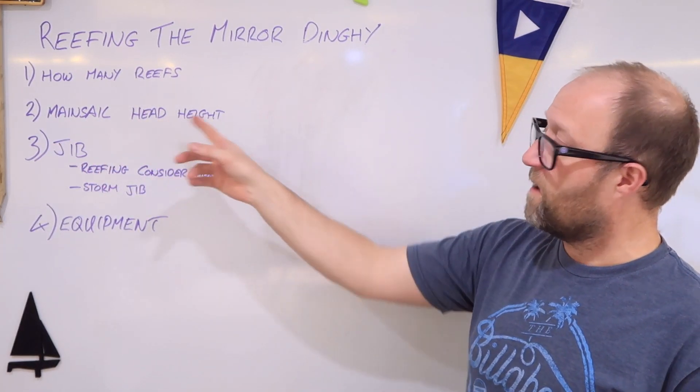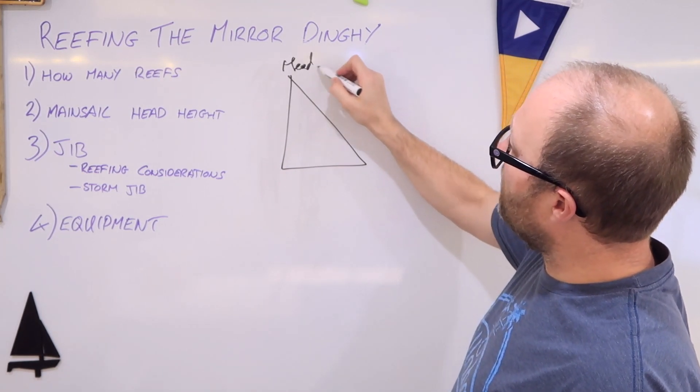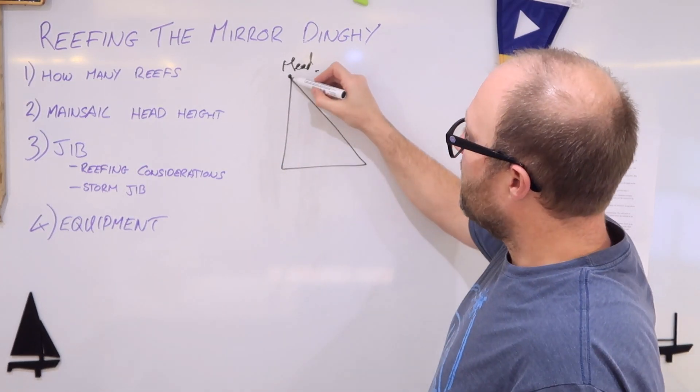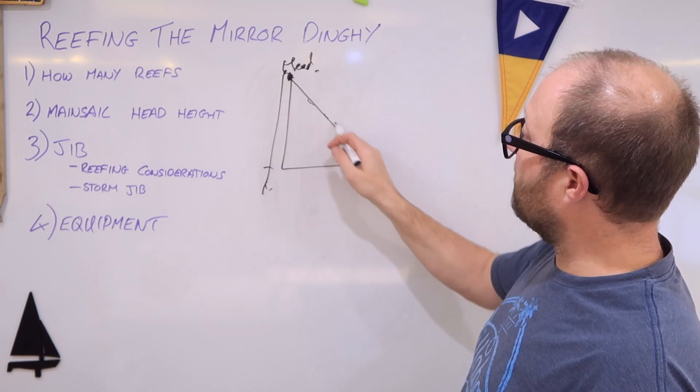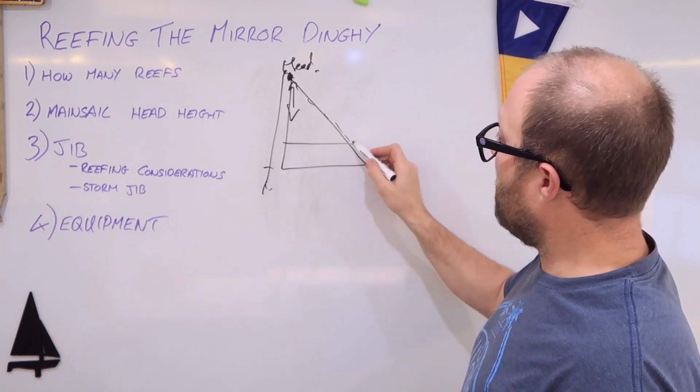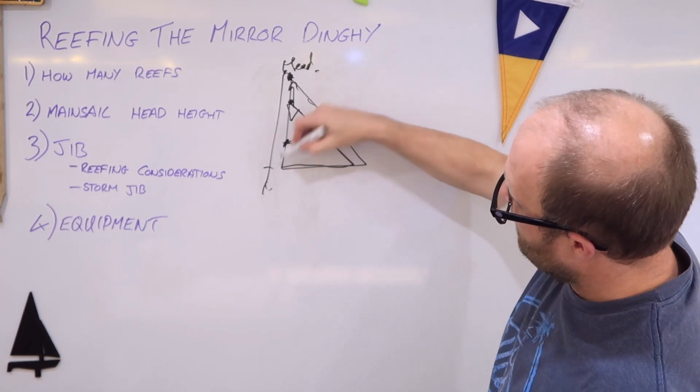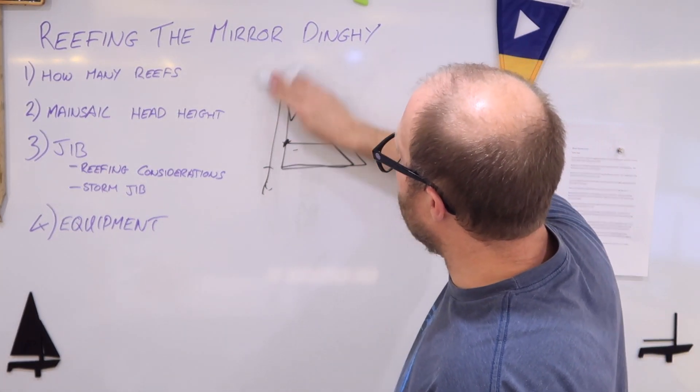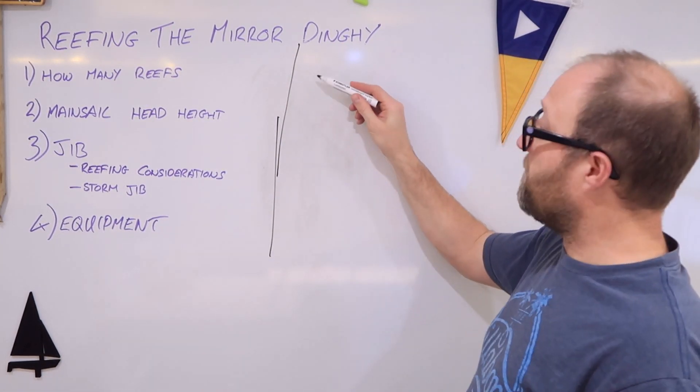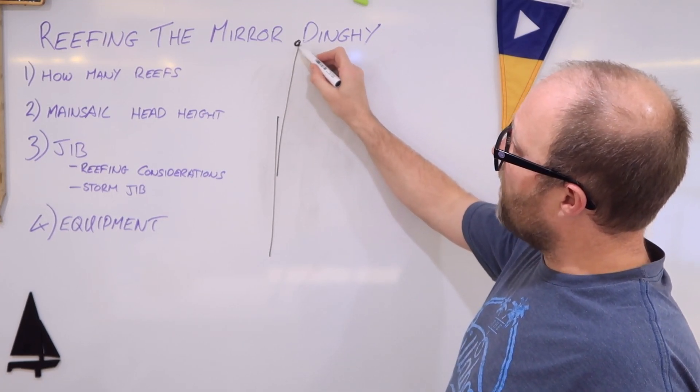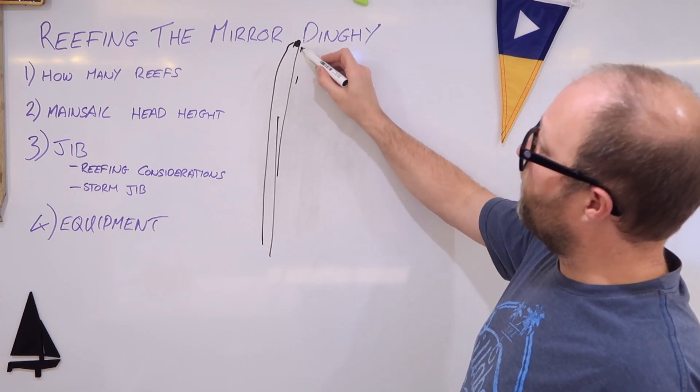The next thing is mainsail head and head height. So the head of the mainsail, for those of you that might not know, I get my terminology mixed up all the time. You've got the head here. That's the top of the sail. Now on a normal yacht, you would have a Bermuda rig. And you'd have basically a line that would come down here on a pulley and that would pull the mainsail up and down. When you reef and you take your first reef, say here, you need to pull, let that sail down a little bit. So the sail will end up here like this.